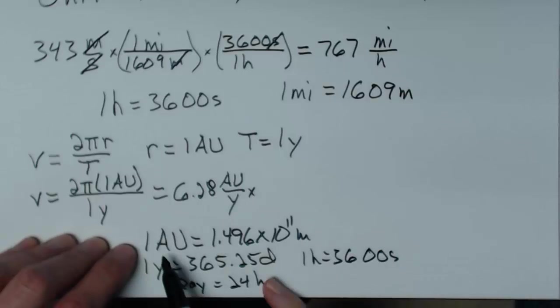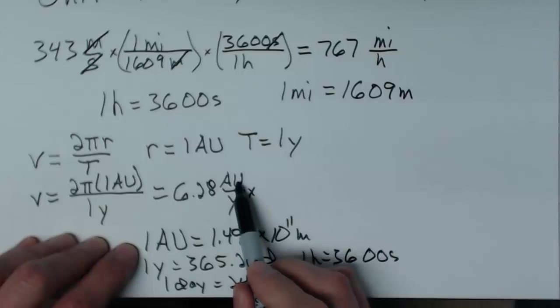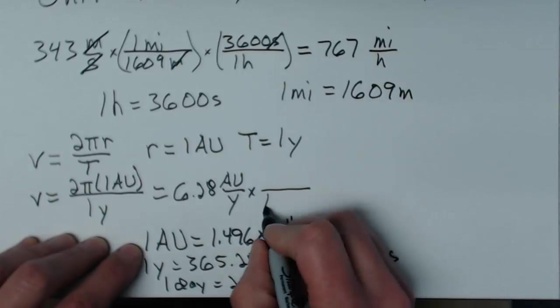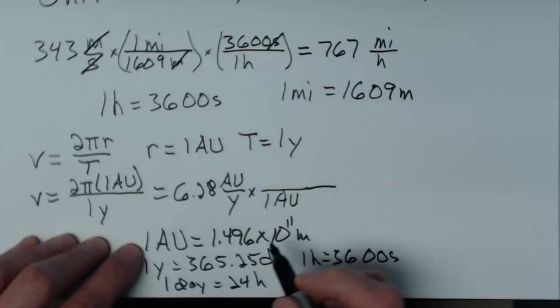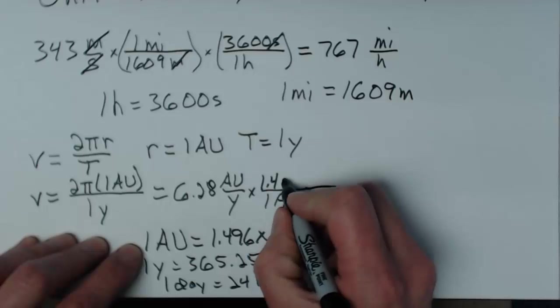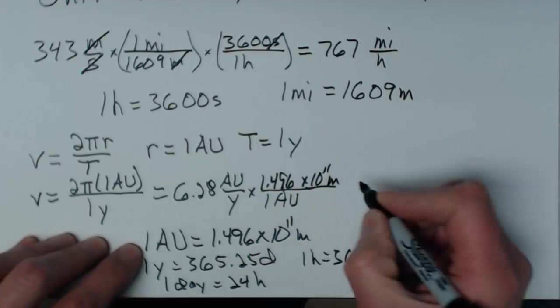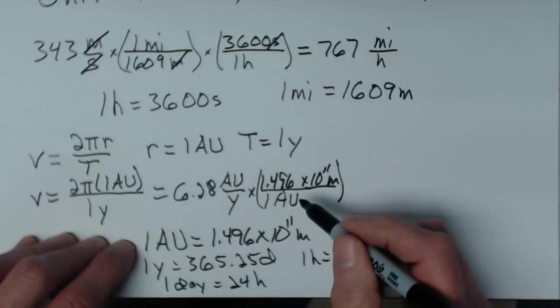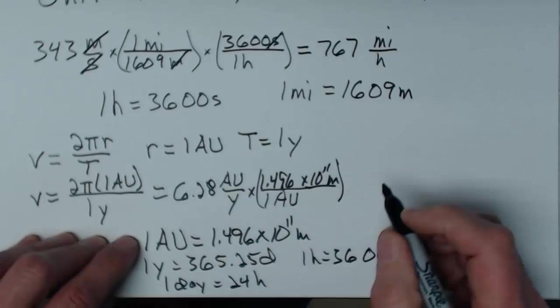Okay. First I'll get rid of the astronomical units. Since the astronomical units here are on top of a fraction, in my conversion I have to put them on the bottom. So my 1 AU goes on the bottom. And my 1.496 times 10 to the 11th meters goes on top. So there's my first funny looking one. Top and bottom are equal, so their ratio is 1.